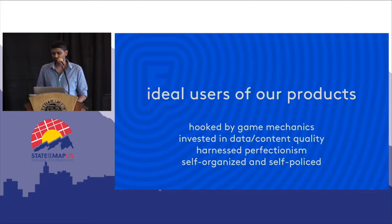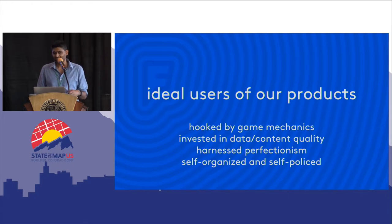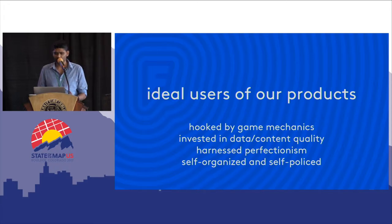The interesting thing about super users is that in many ways they are the ideal users of our products, proving the thesis on which Foursquare was founded — something Dennis Crowley talks about a lot. The game mechanics were not the whole point of Foursquare, but they work to hook users. Super users were similarly hooked by game mechanics, but they started to get value out of the data and content such as tips and photos, and eventually became invested in quality. That tapped into an inner, obsessive perfectionism and attention to detail — they wanted to make the data clean and consistent. In that sense, they're similar to OSM editors. And they're self-organized and self-policed.